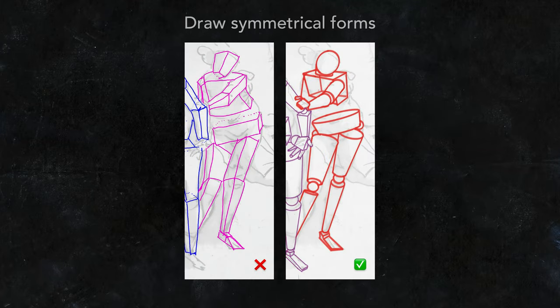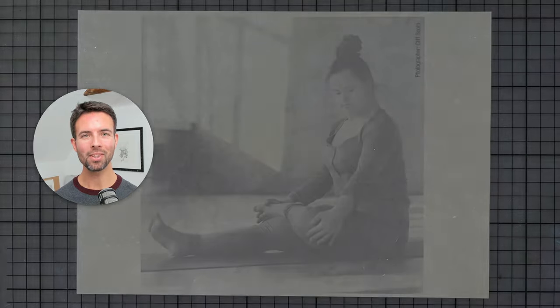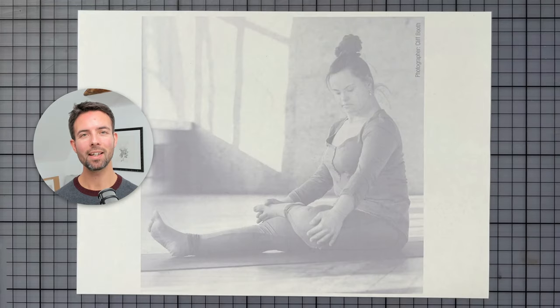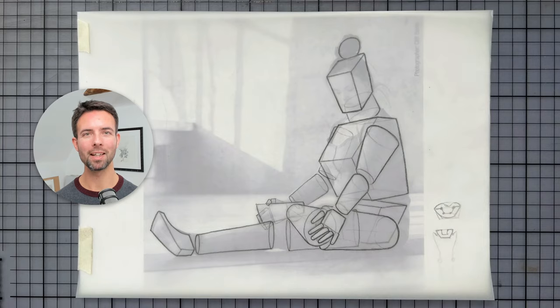Number four, keep the building blocks symmetrical across the body. Think of a mannequin as you draw. And that's it. I'm looking forward to seeing your drawings where you take a complex subject and simplify it into building blocks.